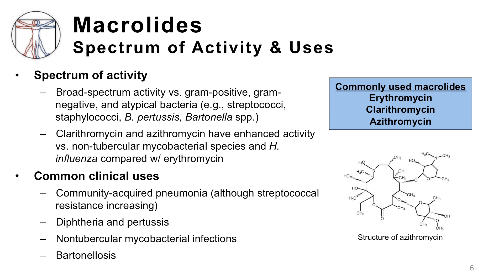The macrolides have a similar broad spectrum of activity as the tetracyclines, which you learned about in Part 1. However, there are some differences, such as the macrolides' activity against Bordetella pertussis, Bartonella species, and non-tubercular mycobacterial species. Regarding clinical uses, the macrolides are usually administered for upper or lower respiratory tract infections, such as community-acquired pneumonia, diphtheria, and pertussis. However, the incidence of macrolide-resistant Streptococcus pneumoniae has increased dramatically over recent years, limiting this class's use as monotherapy in pneumonia, for which Streptococcus pneumoniae is the most common cause.